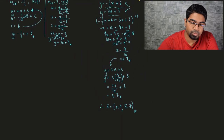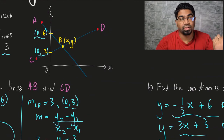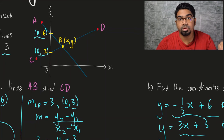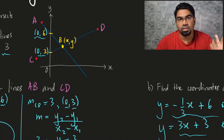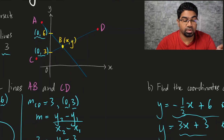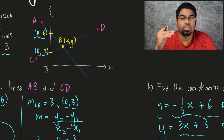Let's recap. When you have one point and the gradient, you have two methods to find the equation of the line. Method 1: start with the gradient-intercept form y = mx + c, substitute the known values, solve for c, and write the full equation. Method 2: use the gradient formula, substituting y and x for (x₂, y₂) and the known coordinates for (x₁, y₁). For finding the intersection point, equate the y expressions from both equations and solve simultaneously.